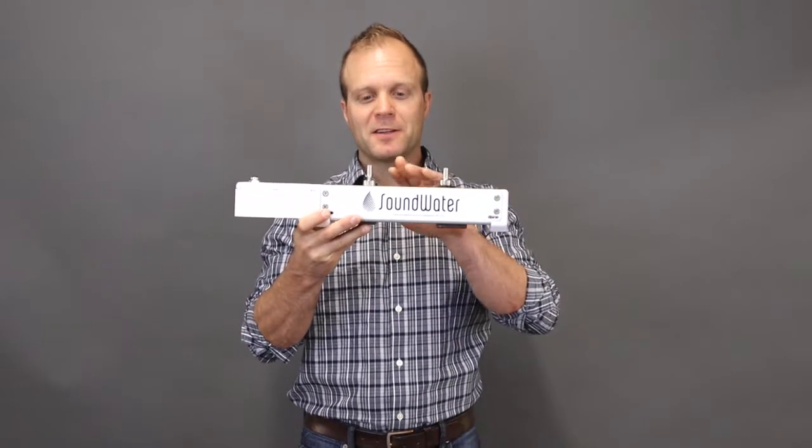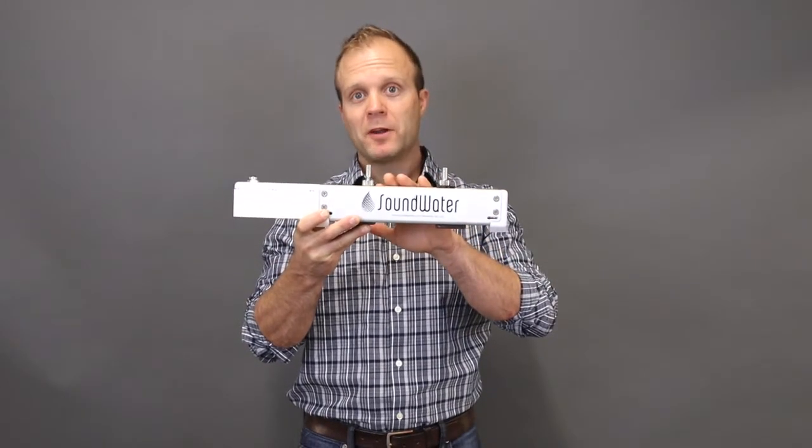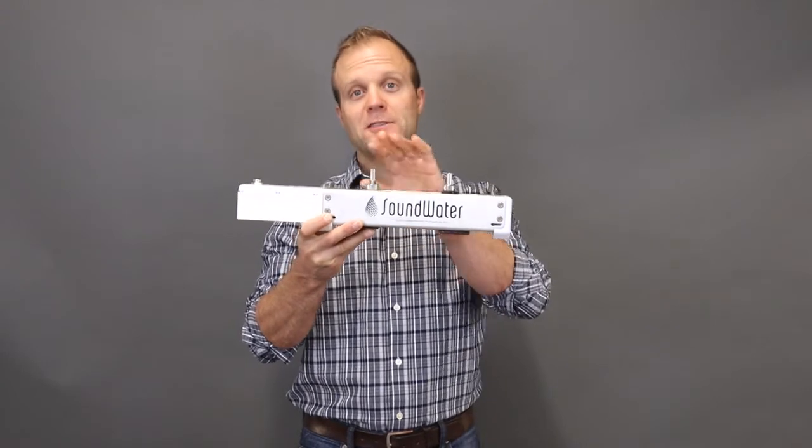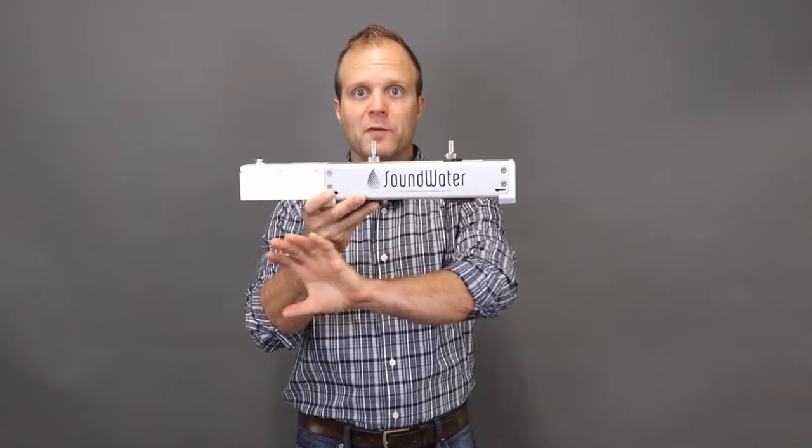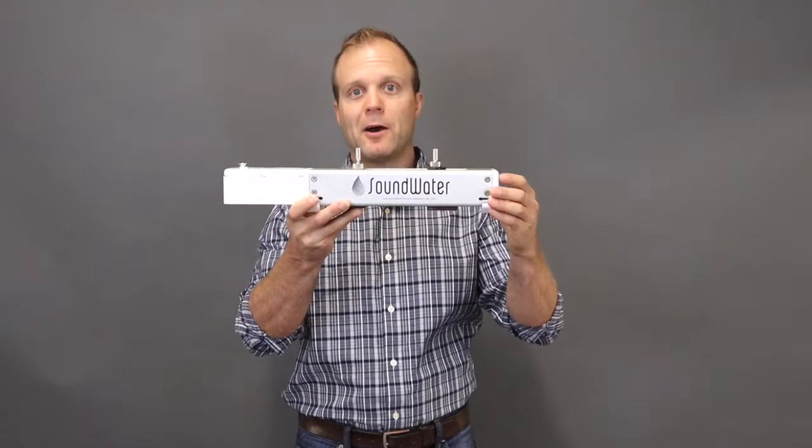This is a clamp-on ultrasonic flow meter, meaning you install it outside the pipe and it uses ultrasound to sense the flow moving inside the pipe without contacting the fluid.